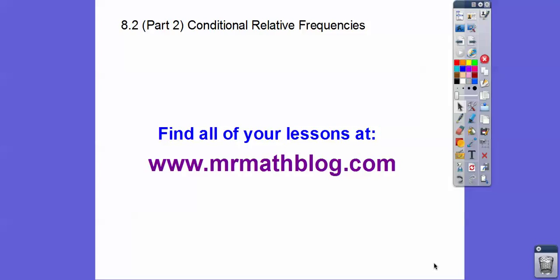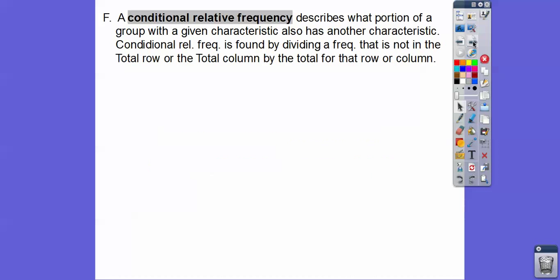This lesson is Part 2 of Module 8, Conditional Relative Frequencies, and we're also going to be doing what's called Finding Possible Associations. All your lessons can be found at MrMathBlog.com. Once you get there, make sure you click the Integrated Math 1 link at the top.